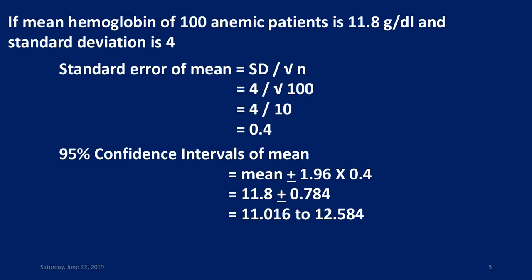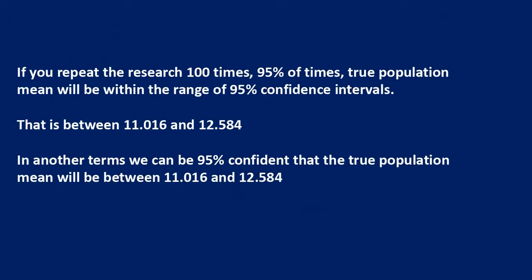So the 95% confidence interval of mean varies from 11.016 to 12.584. If you repeat the research 100 times, 95% of the time the true population mean will be within the range of the 95% confidence interval of mean, that is between 11.016 and 12.584.